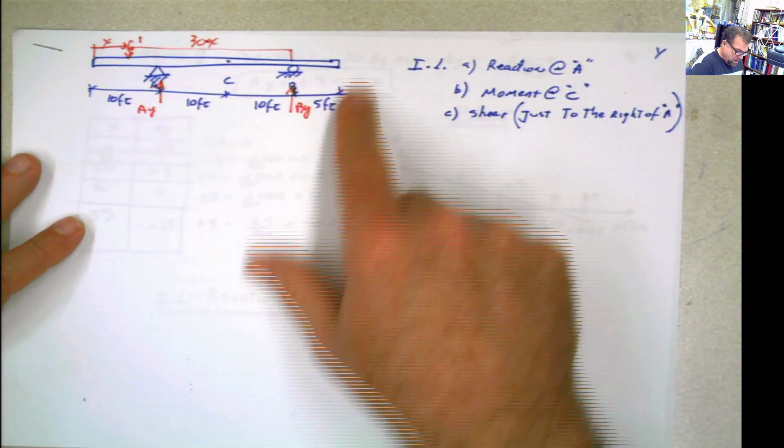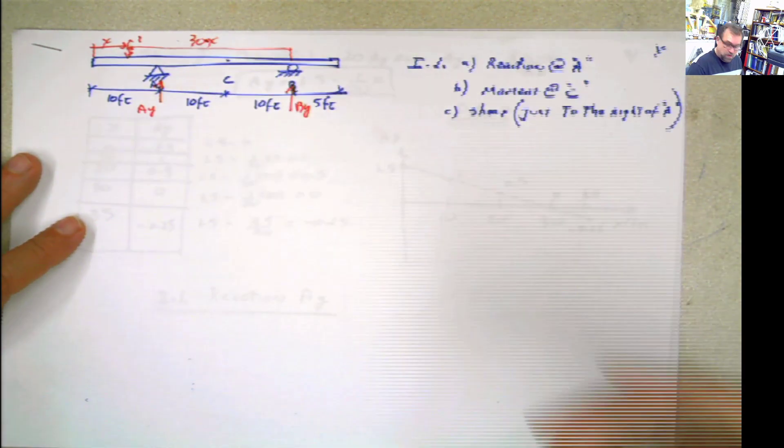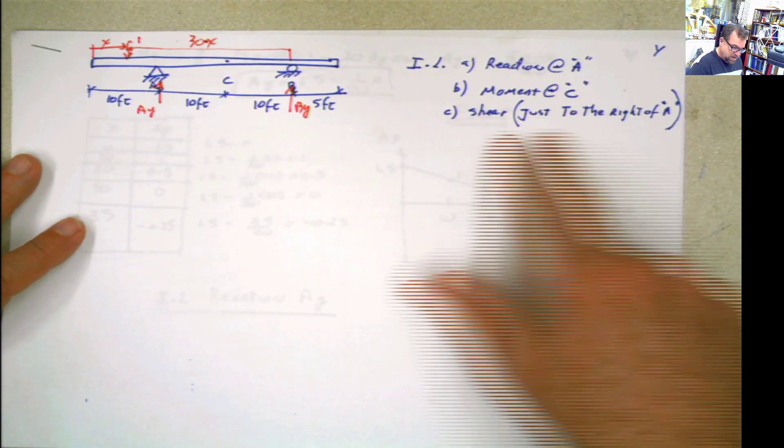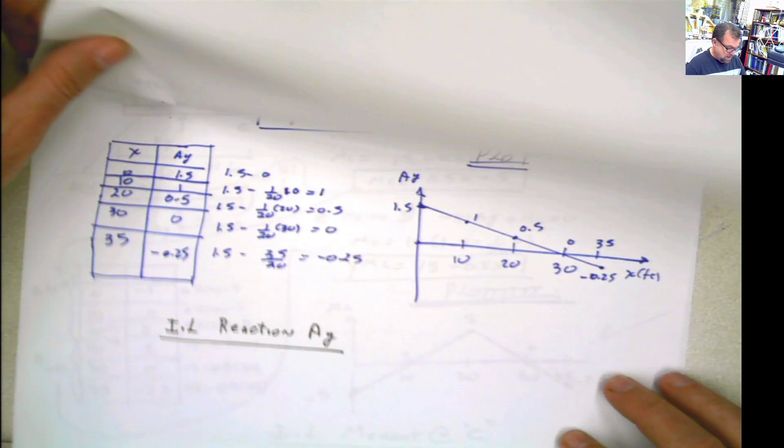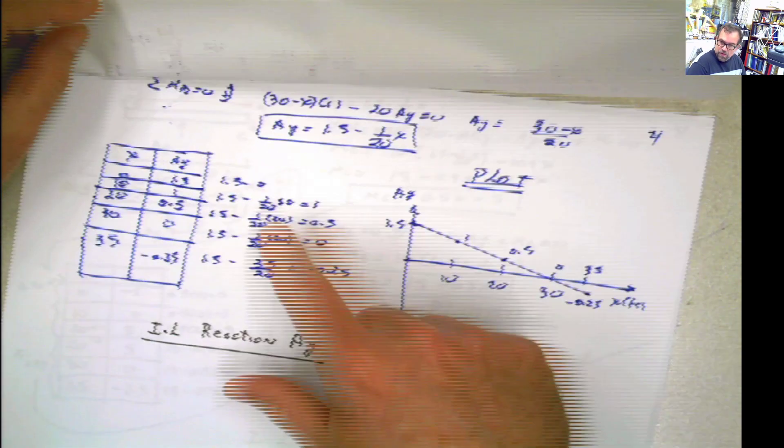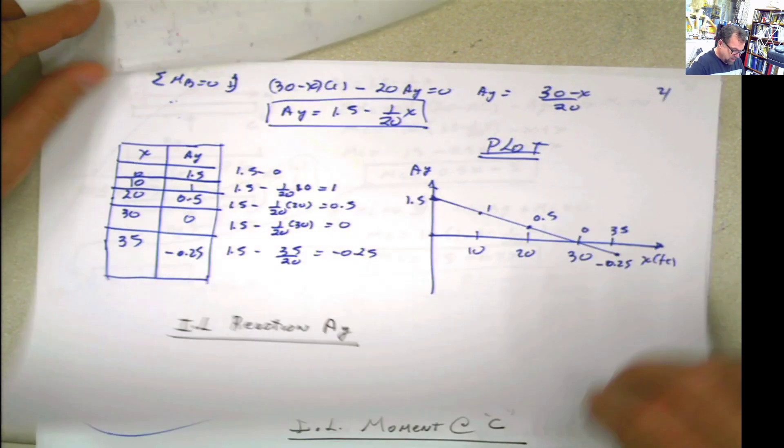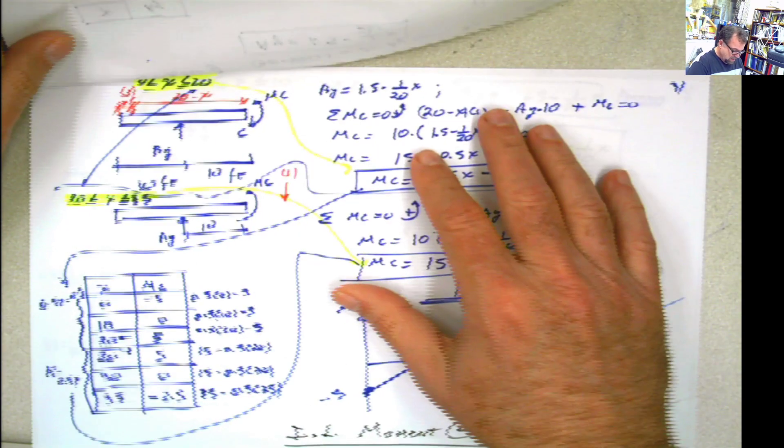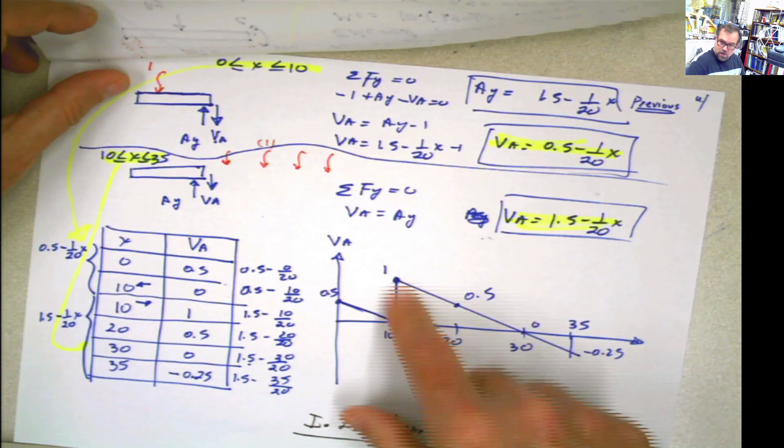We did this problem. We have to find the reaction at A, just the influence line. Draw the influence line for the reaction at A, the moment at C, and the shear just to the right of support A. And these are the same papers that I used when I prepared it. Reaction at A, we have these values here, and then we went and we did the moment at C, and then we did the influence line just to the right of the support.